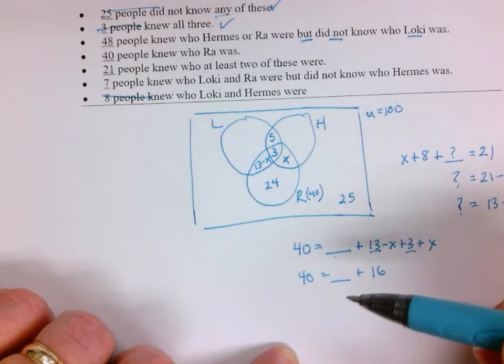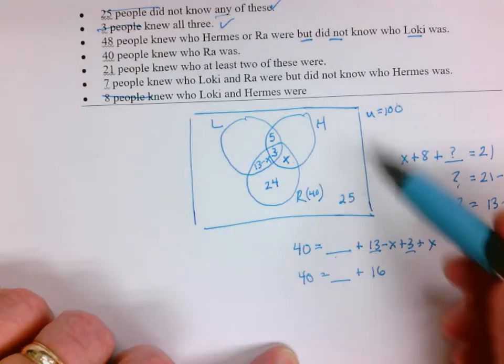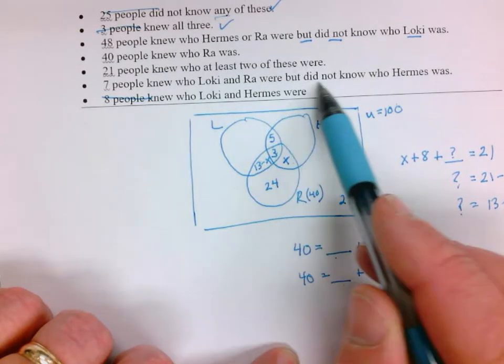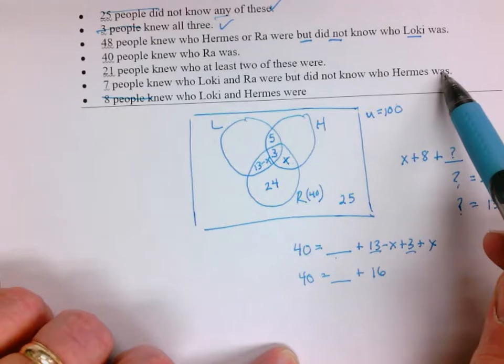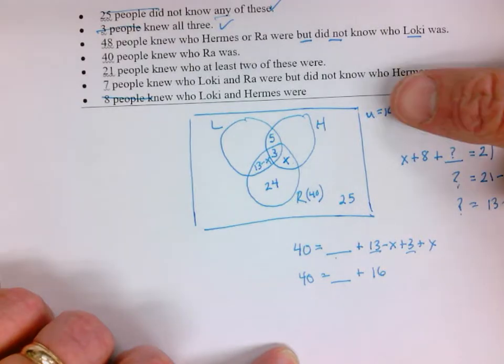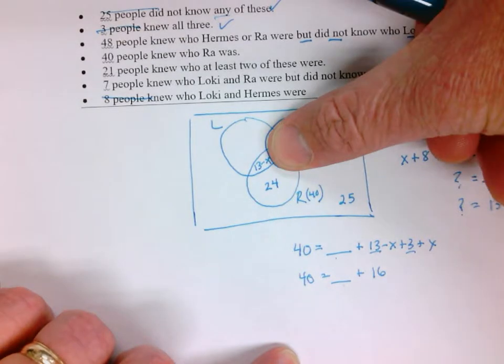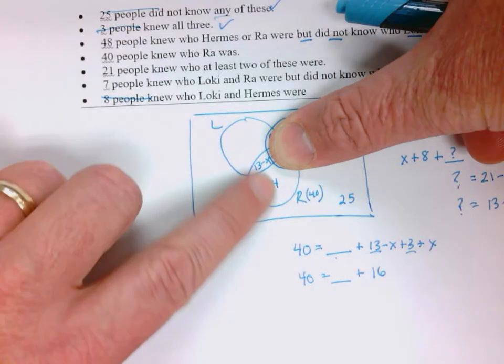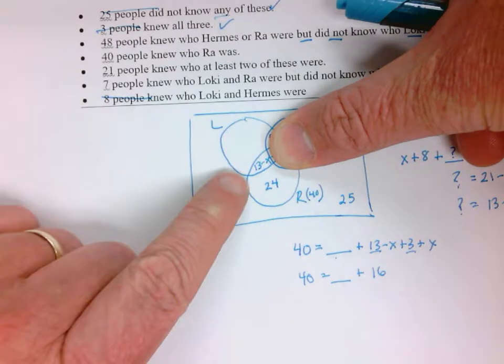We know a little bit more information. Now we can go back and use some of these facts we didn't use. Seven people knew Loki and Ra but not Hermes. So Loki and Ra but not Hermes has got to be seven. That means X is 6, which is awesome.